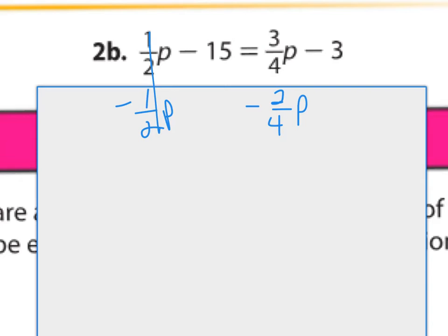This side is taken care of, and I'm just left with negative 15 equals. Now, 3 minus 2 is 1 all over 4. So it leaves me with 1/4p minus 3. Then I will add 3 and add 3. That gets rid of the 3 on this side. And on this side, I am left with negative 12 equals a quarter of p. A quarter of p is negative 12. That must mean that p must be negative 48.